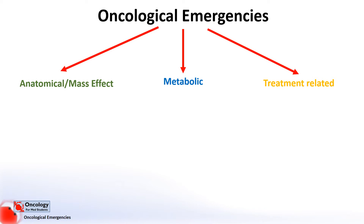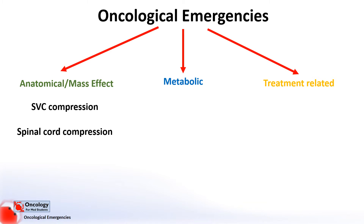In the first category, mass effects, the most important emergencies to be aware of are superior vena cava compression and spinal cord compression. In superior vena cava syndrome, the mass effect of the tumour pressing on the vena cava can prevent blood from returning to the heart. If uncontrolled, tumours can go on to block the airways or cause a build-up of pressure in the brain, both of which can be fatal.